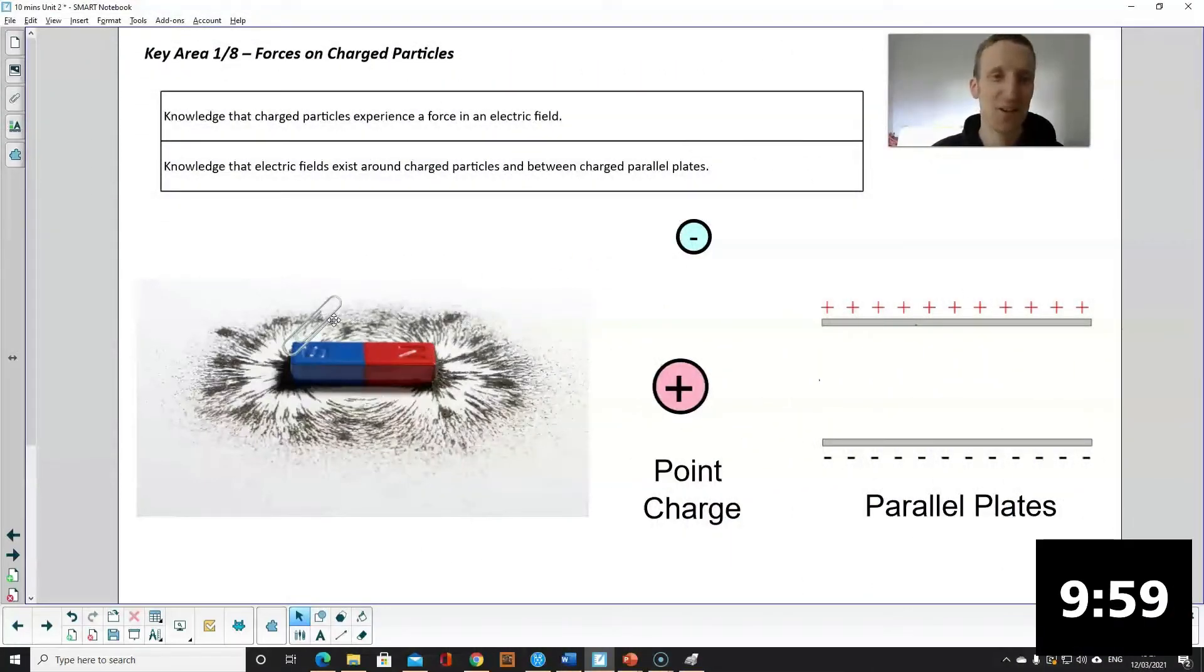Around a magnet you have a magnetic field and it's simply the invisible region where something like a paperclip is going to experience a force. Similarly, around a charged particle or between charged parallel plates there is an invisible region and in this case it's where a charged particle is going to experience a force. Either attraction or repulsion depending on the charge.